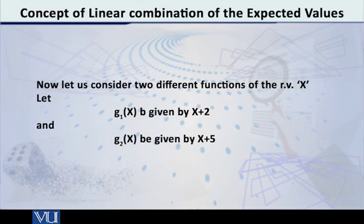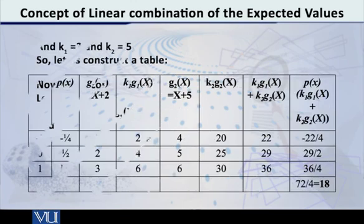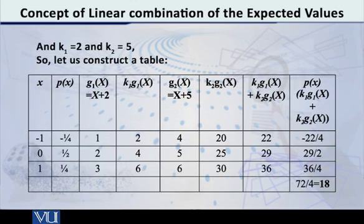Now let us consider two different functions of this random variable x. Also let us specify k1 and k2. Suppose that k1 is equal to 2 and k2 is equal to 5. So let us then construct a table of g1(x). g1(x) was x plus 2. So what are the values? Minus 1 plus 2 is equal to 1.